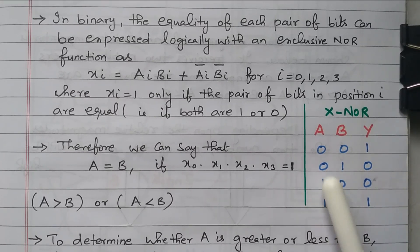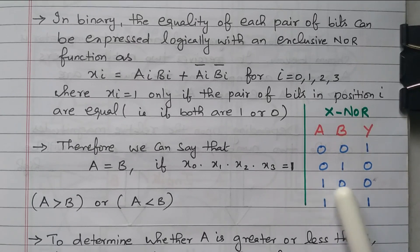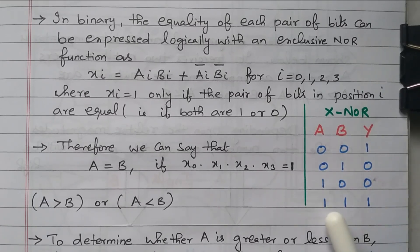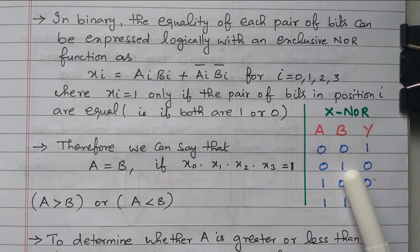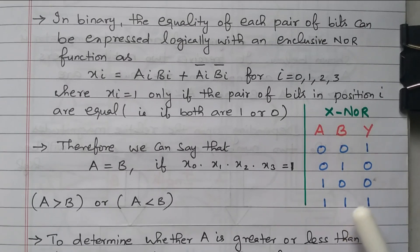If both the inputs are equal, the output is 1. If the inputs are different — 0,1 or 1,0 — the output will be 0. Whenever A equals B: if A is 0 and B is 0, it gives 1; if A is 1 and B is 1, it gives 1. If A is 0 and B is 1, or A is 1 and B is 0, the output will be 0. So this property can be used to check whether both the digits are equal.